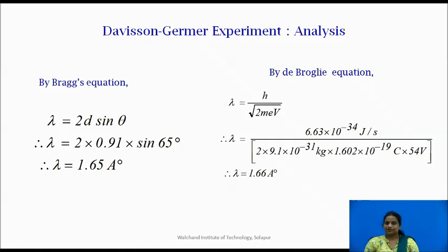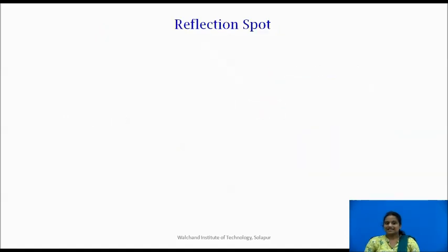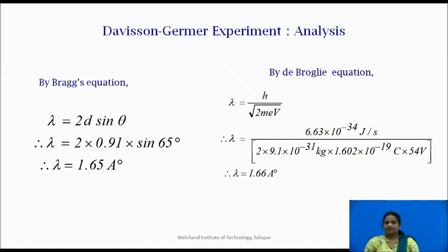Therefore, Davison-Germer experiment gave conclusive evidence that electrons exhibit diffraction property.